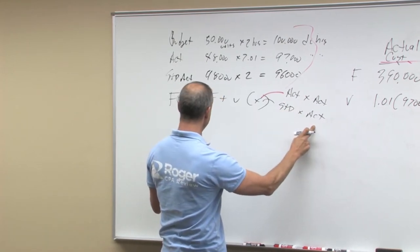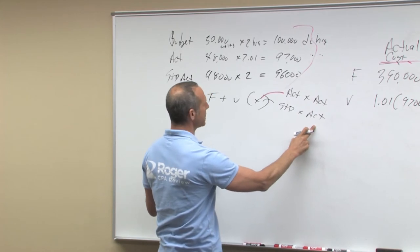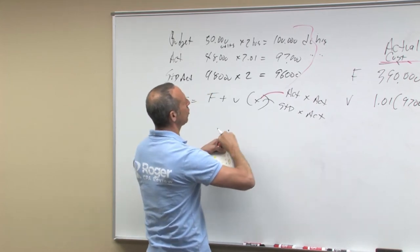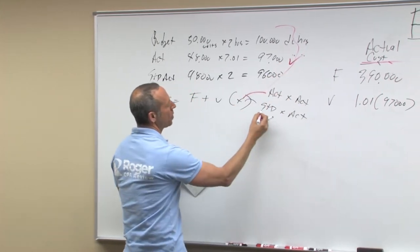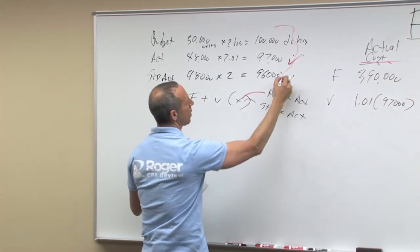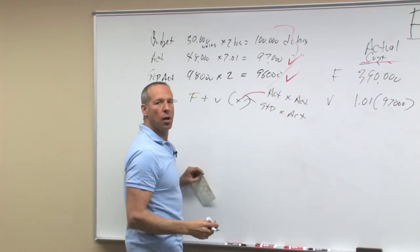Now when we look at this, what is actual at actual? 97,000. What is standard allowed for actual? 96,000.